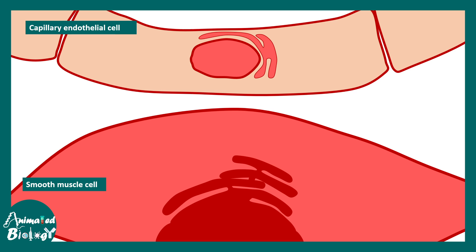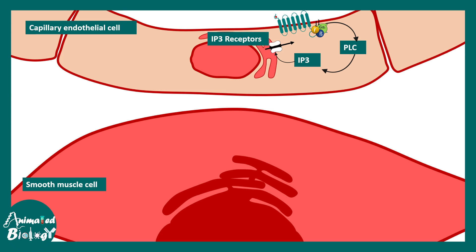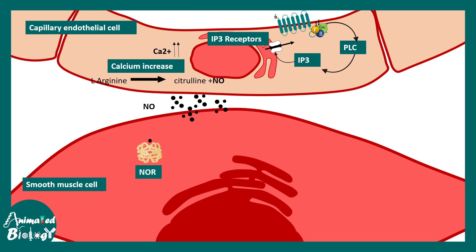The capillary endothelial cell activates a G protein, ultimately activating phospholipase C, then IP3, leading to increased calcium. This calcium is associated with conversion of L-arginine to citrulline and nitric oxide. In simple words, the capillary endothelial cell is essentially the production site for nitric oxide, which is then received by a nitric oxide receptor in the smooth muscle cell.